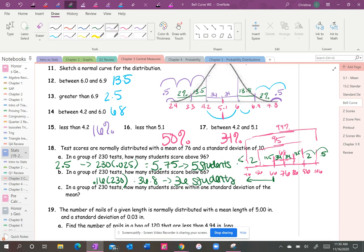What's the next one? In a group of 230 students, how many students score within one standard deviation of the mean. So remember one standard deviation is just one jump to the left and the right, which in this case and always is 68 percent. So 68 percent of 230 students is 156.4, so 156 students.